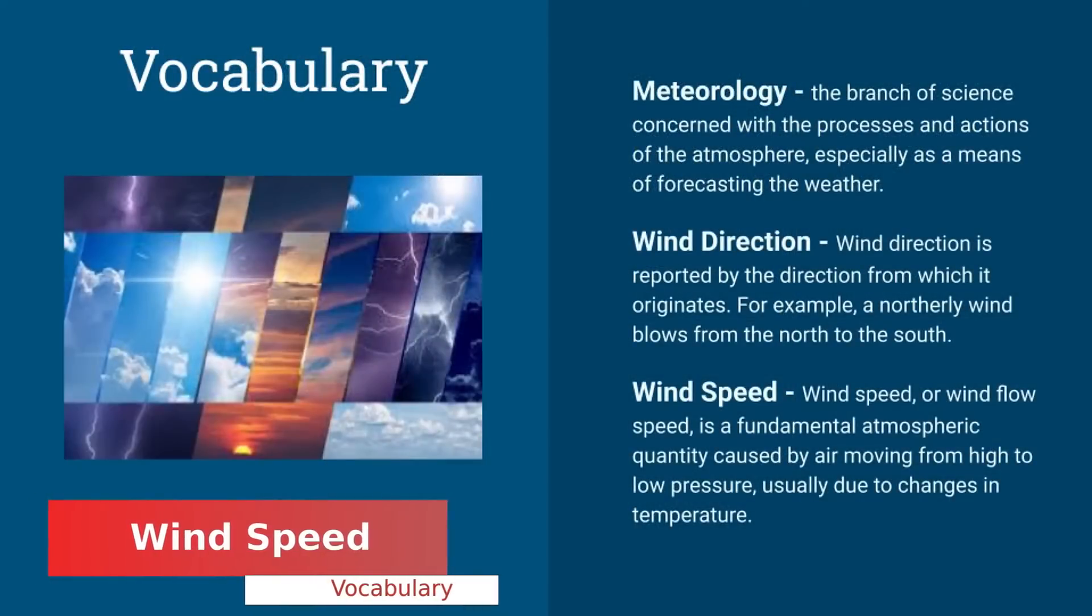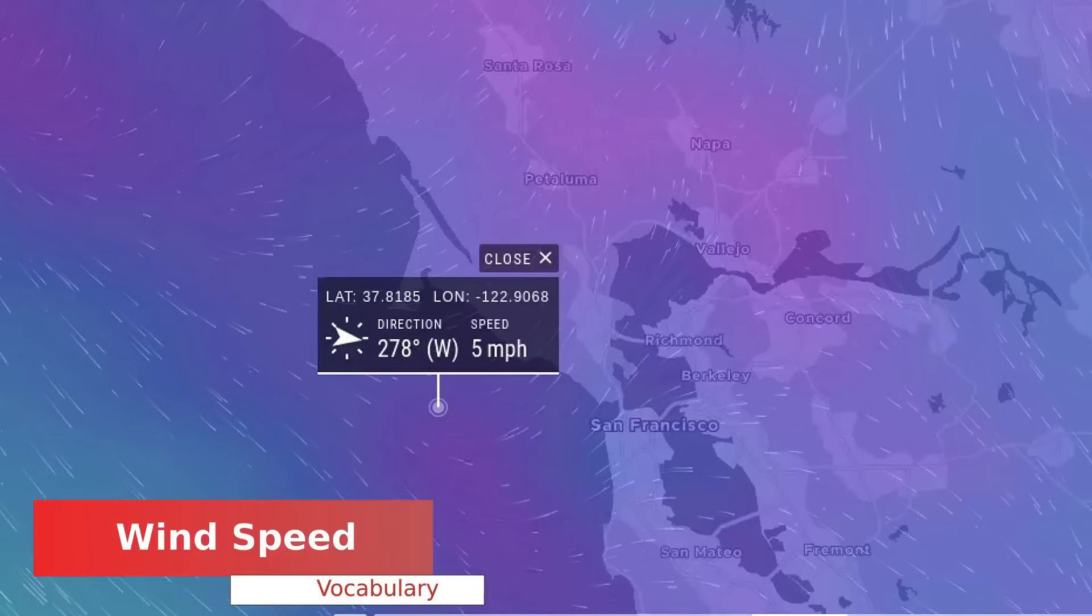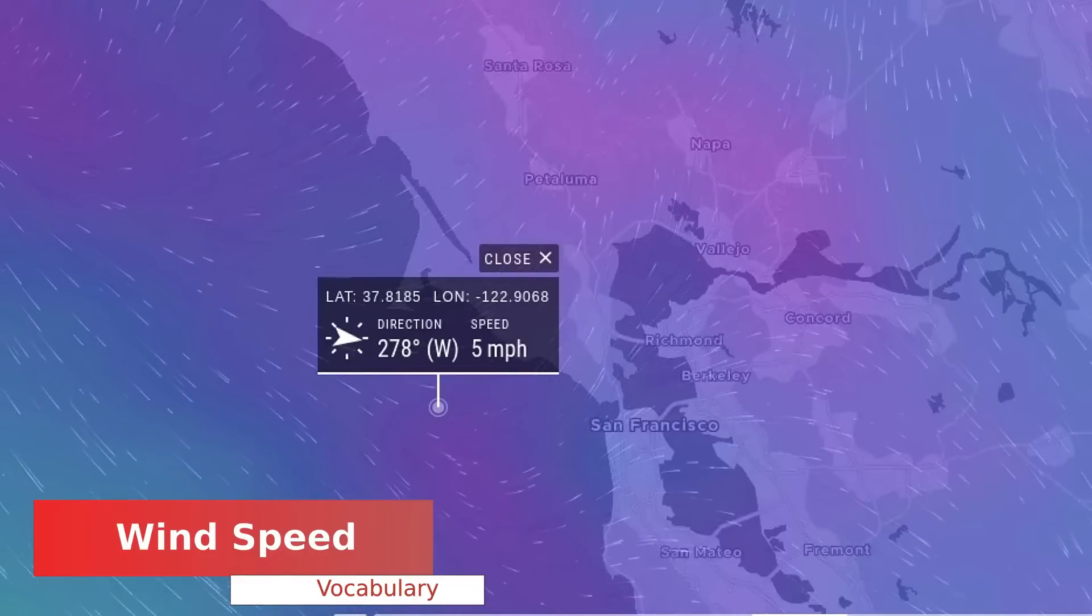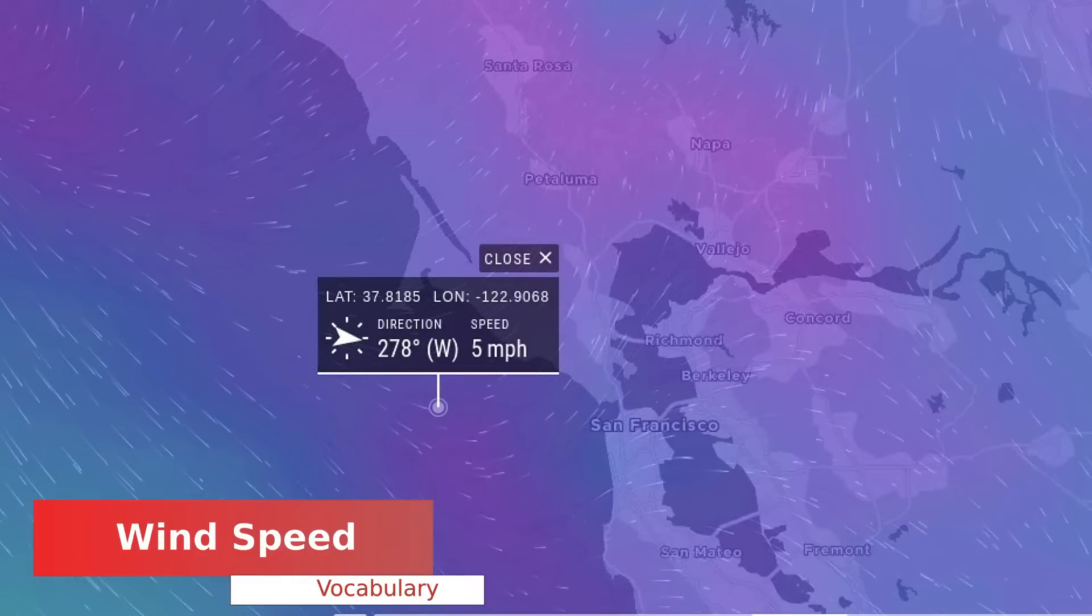Wind speed, or wind flow speed, is a fundamental atmospheric quantity caused by air moving from high to low pressure, usually due to changes in temperature.